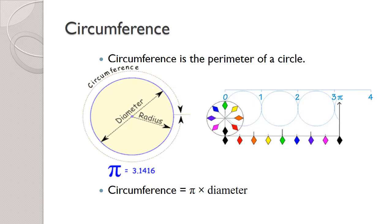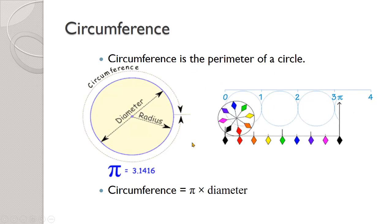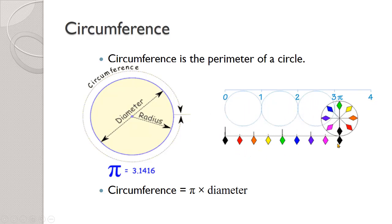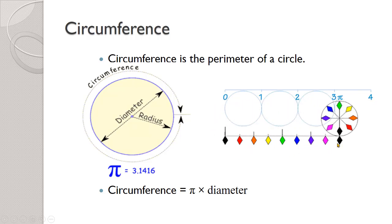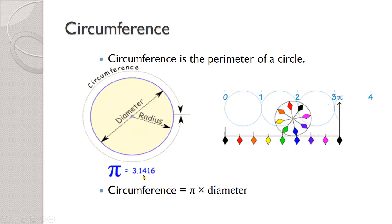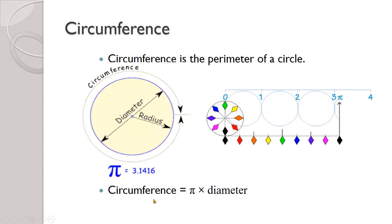We're more interested in things that are round, so we want to talk about circumference. Circumference is the perimeter of a circle. No matter how big a circle is, the distance all the way around — as shown in this animation — is always a little bit more than three times its diameter. In fact, it's about 3.14 times its diameter. So if we take the diameter and multiply it by 3.1416 — also known as pi — that gives us our circumference.